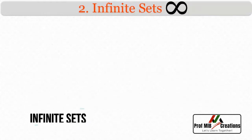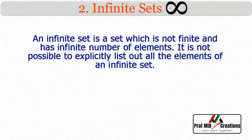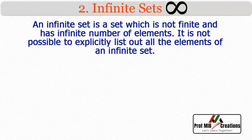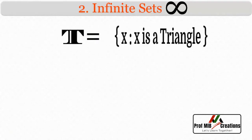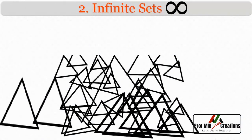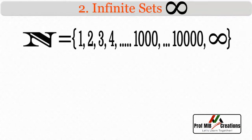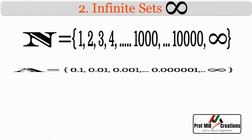Next is infinite sets. An infinite set is a set which is not finite and has an infinite number of elements. It is not possible to explicitly list out all the elements of an infinite set. For example, the set T equal to {x such that x is a triangle} — you cannot count the number of triangles that can be formed; there are infinitely many. Another example is N, the set of natural numbers. Similarly, the set A equal to the set of fractions is also an infinite set.